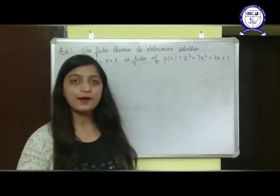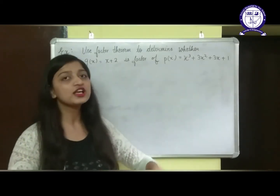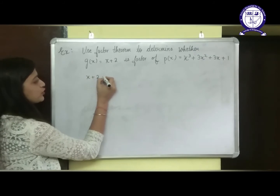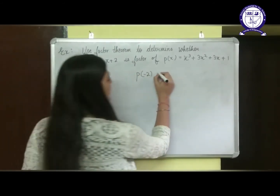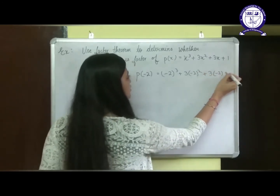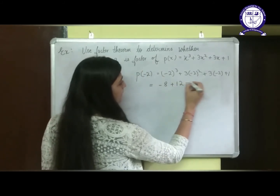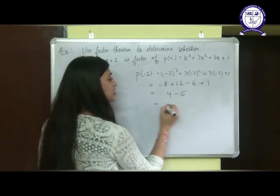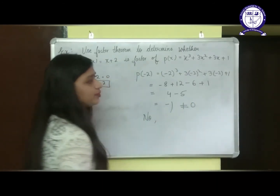Let's take another example: use the factor theorem to determine whether G(x) = X plus 2 is a factor of the given polynomial. Put X plus 2 equals 0, so X equals minus 2. Then T(minus 2) = (minus 2)³ + 3(minus 2)² + 3(minus 2) + 1 = minus 8 + 12 minus 6 + 1 = minus 1, which is not equal to 0. Therefore, X plus 2 is not a factor.